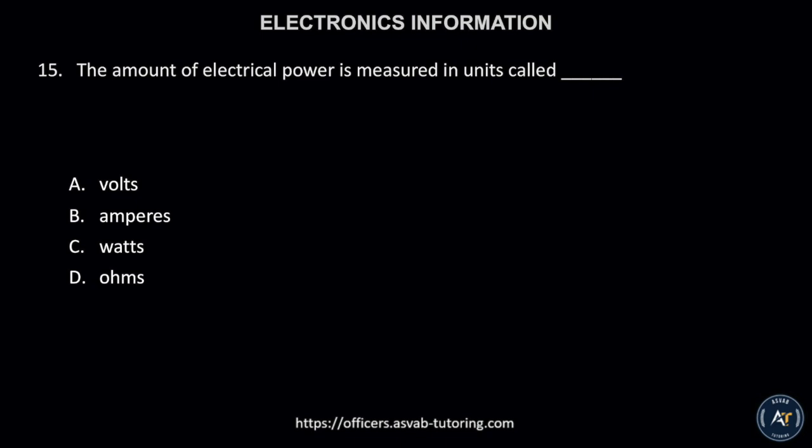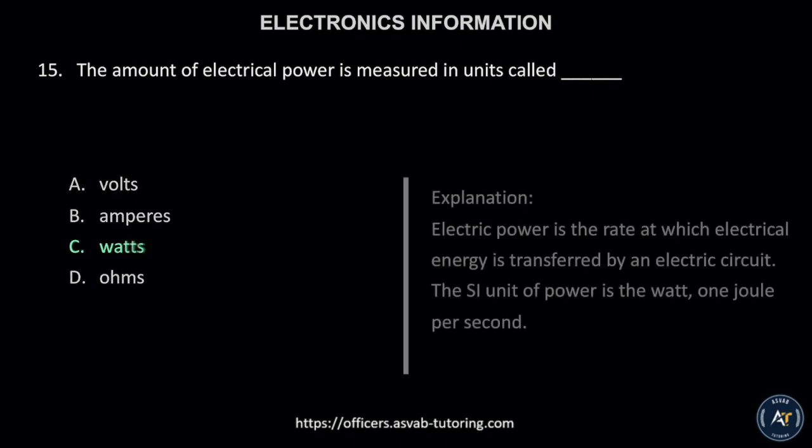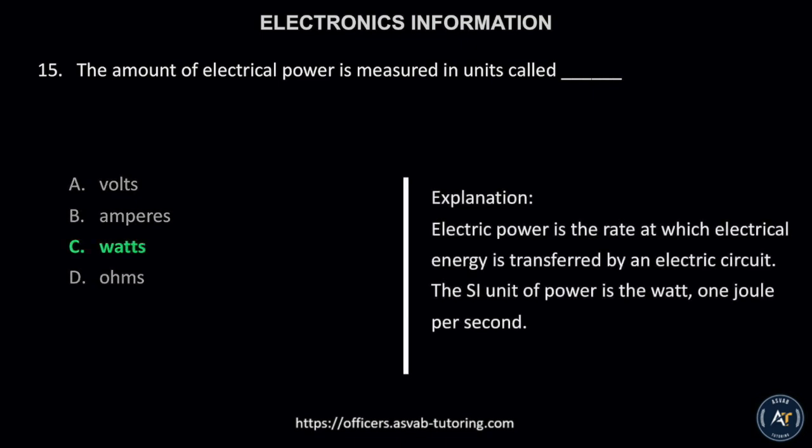Number 15. The amount of electrical power is measured in units called: A. Volts, B. Amperes, C. Watts, or D. Ohms? The correct answer is letter C, watts. Electric power is the rate at which electrical energy is transferred by an electric circuit. The SI unit of power is the watt, 1 joule per second.